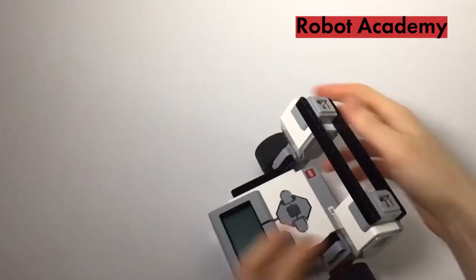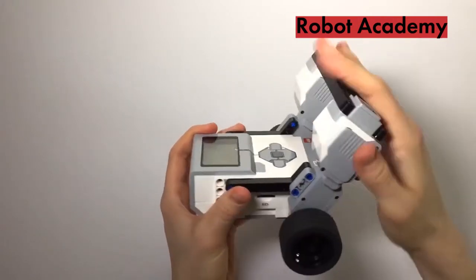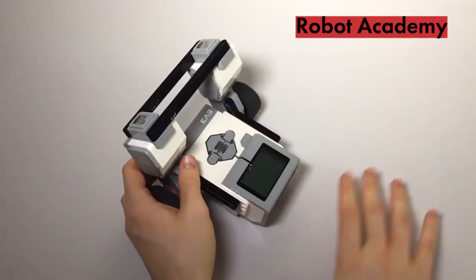Okay. So now we've got this part of the robot. We've got our motor attachment. Now we have to think about the front half of the robot.